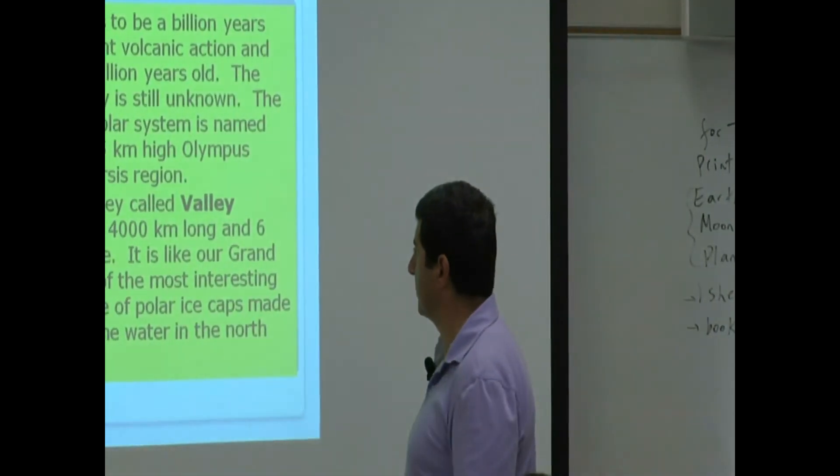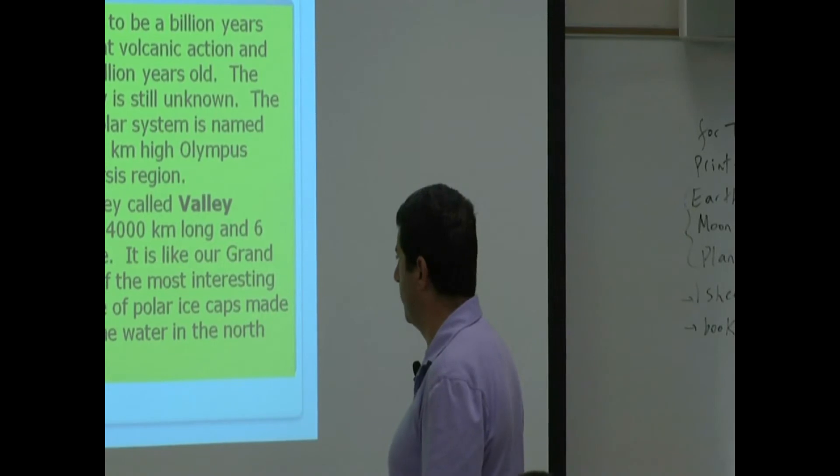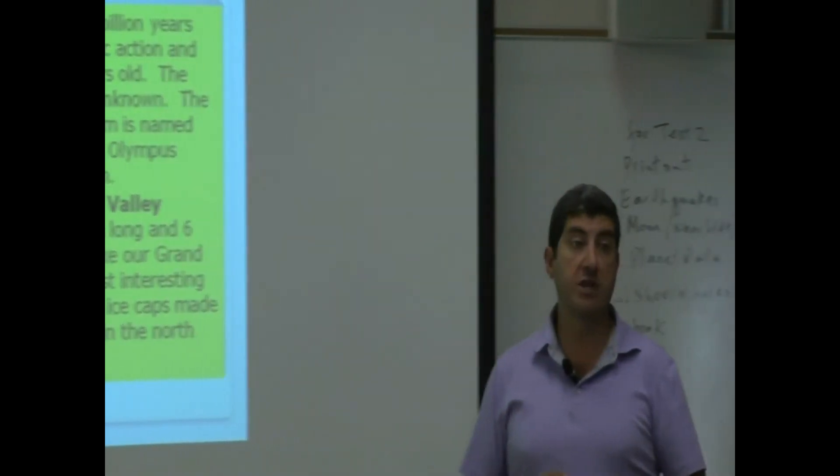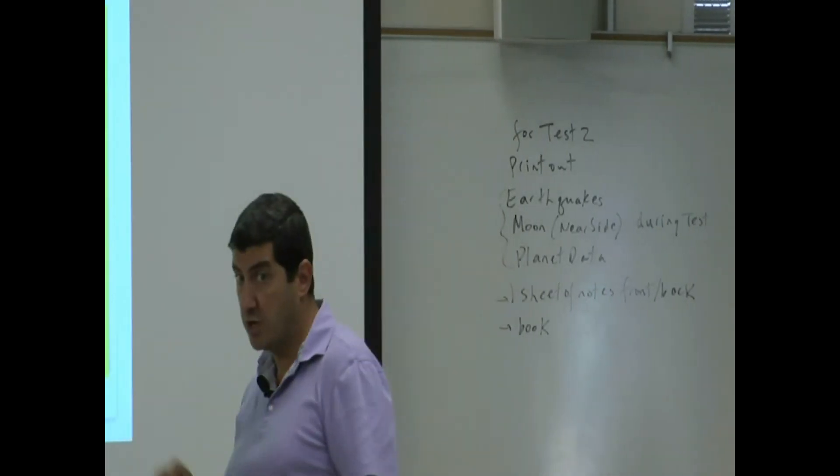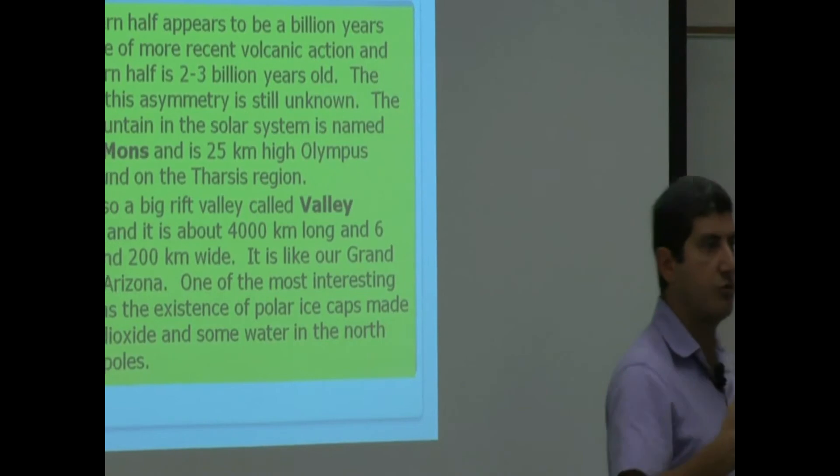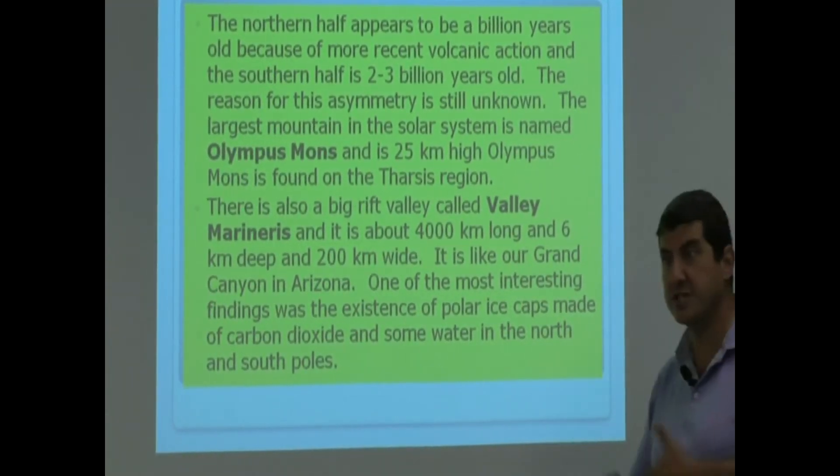One of the most interesting findings was the existence of polar ice caps made of carbon dioxide and some water in the northern and southern poles. So that's going to be one of the missions that we send in the future is to analyze the nature of those polar ice caps. What's in there? What caused it? And what do we do about that? Is there water in it and everything?